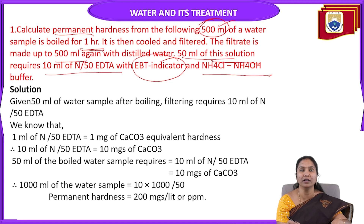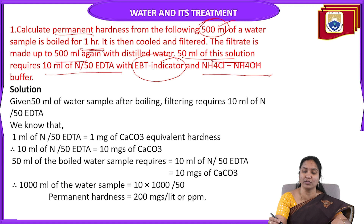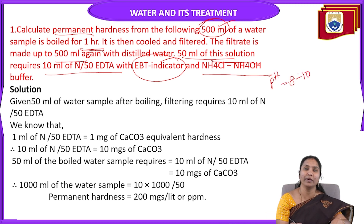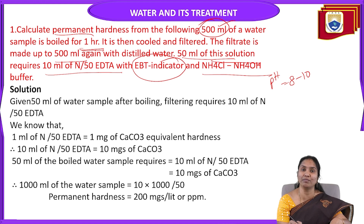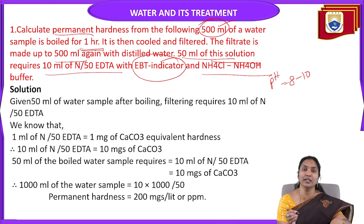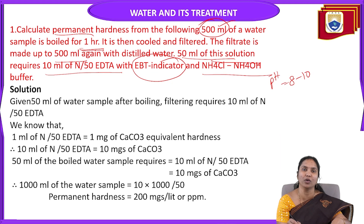The purpose of the buffer is to maintain a stable pH. The pH range maintained is 8 to 10, because at this pH range only EDTA forms a complex with the hardness causing ions which are present in water. In this process we add EBT indicator and buffer solution to the water sample. Now we can calculate the permanent hardness of the given water sample.